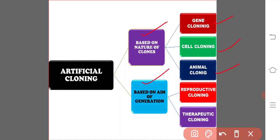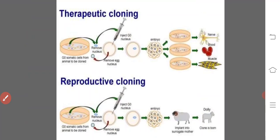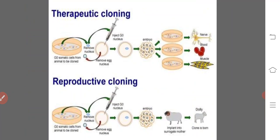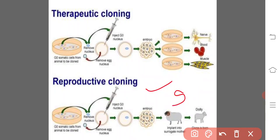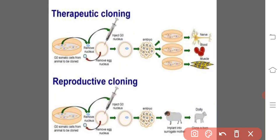Based on the aim of generation, artificial cloning is categorized into two types: reproductive cloning and therapeutic cloning. Reproductive cloning is the process of producing an animal through somatic cell nuclear transfer technique (SCNT), which is identical to the donor animal. The embryo produced is placed into a uterine environment where it can implant and develop into a new organism.